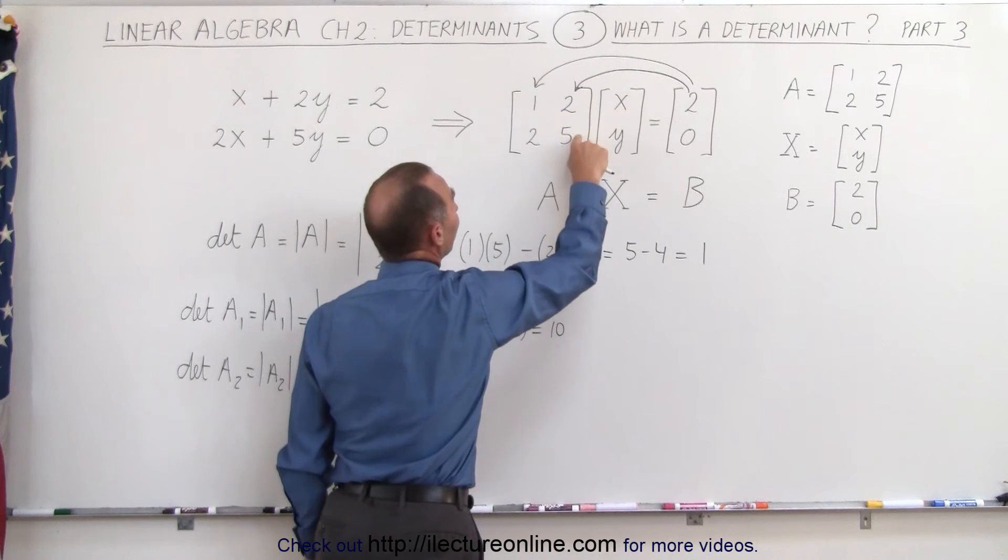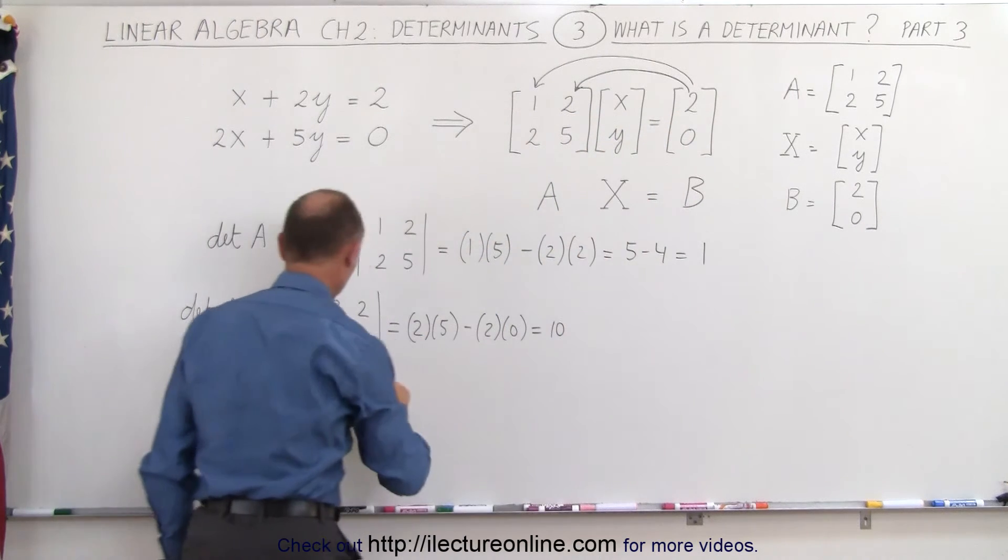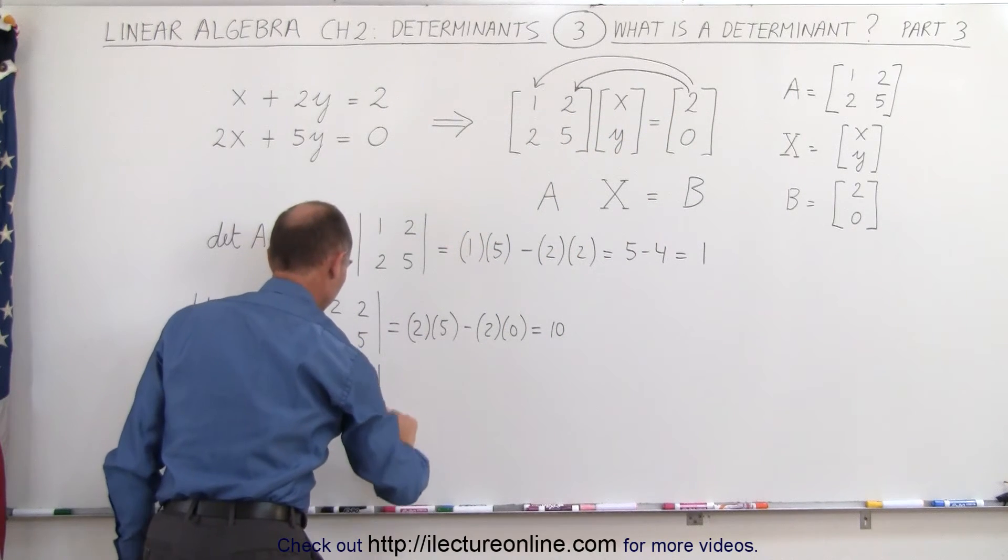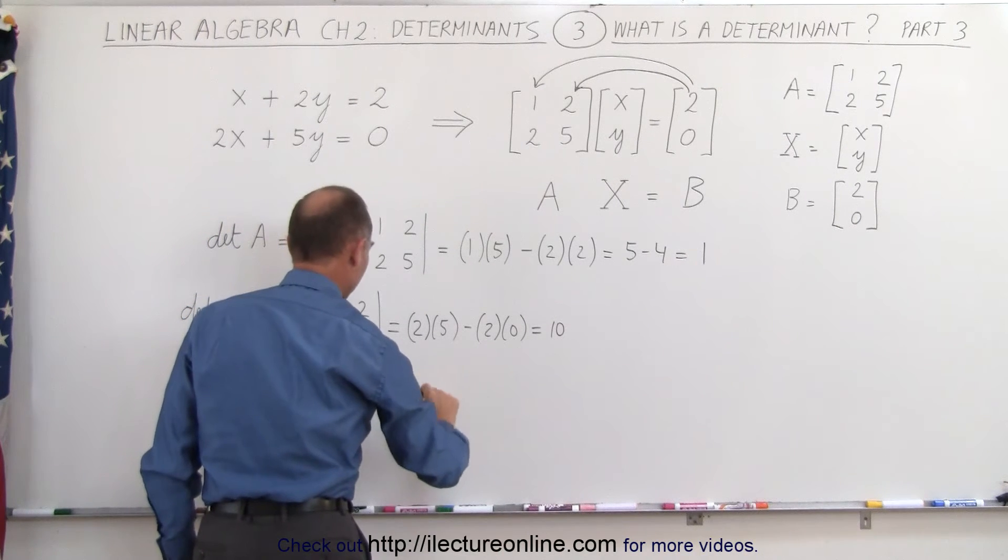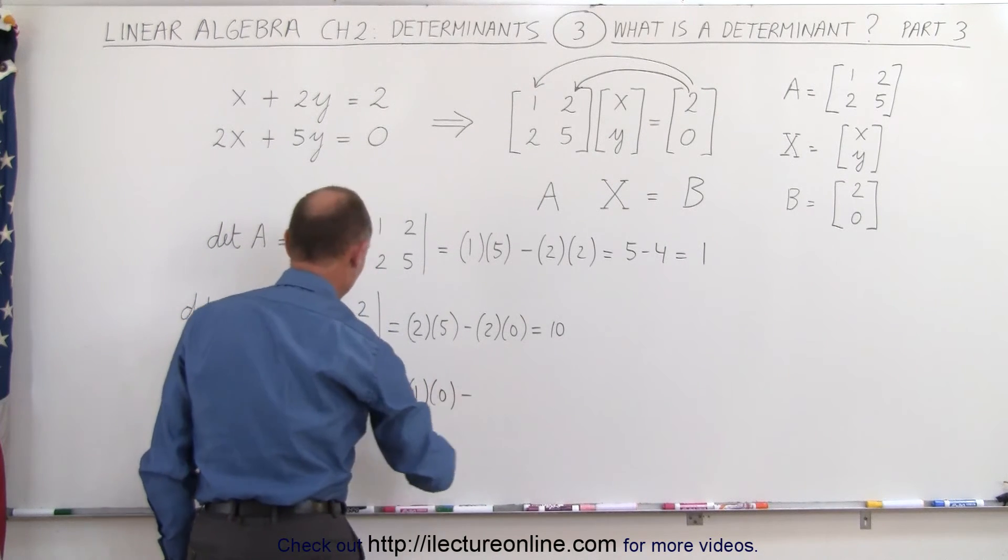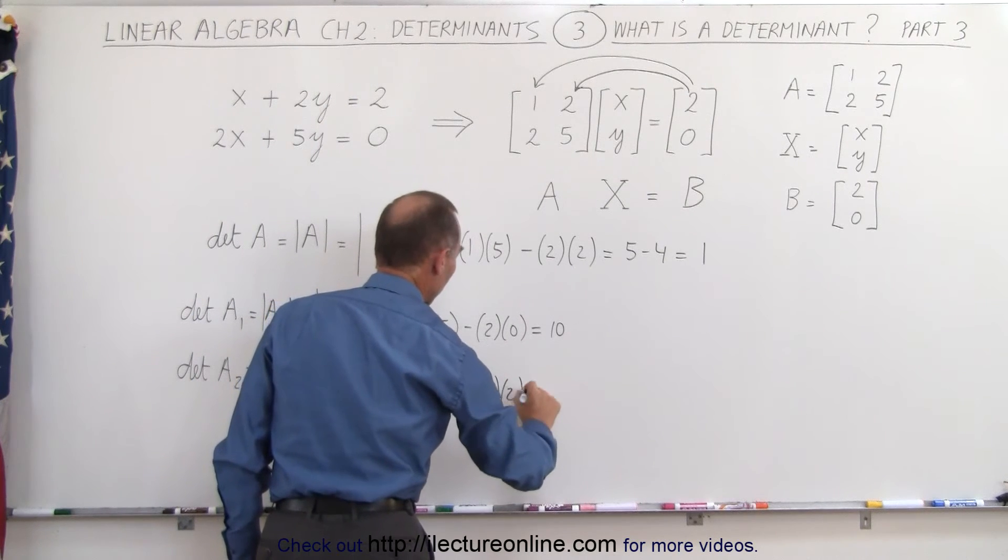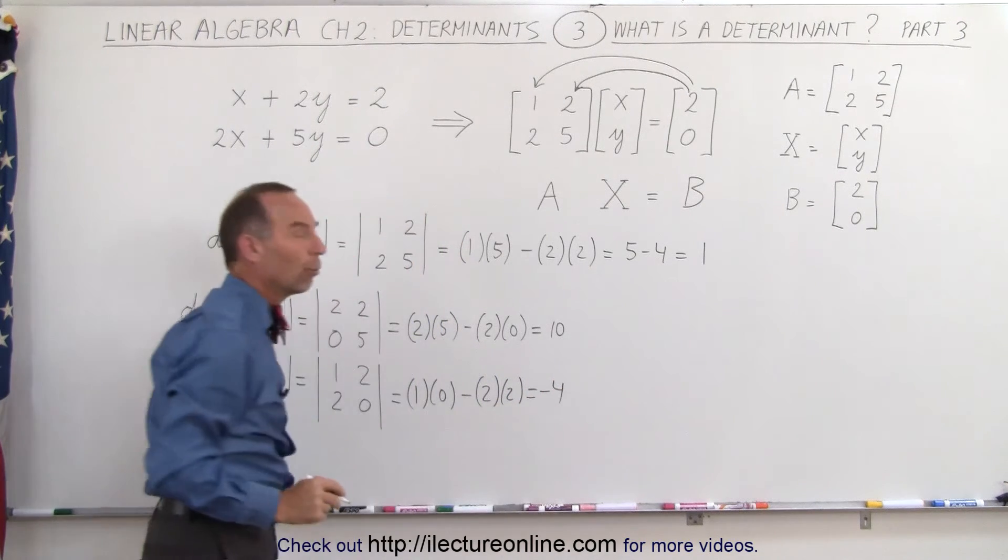2 and 5 is now replaced by 2 and 0. When we work this out, we get 1 times 0 minus 2 times 2, which gives us minus 4.